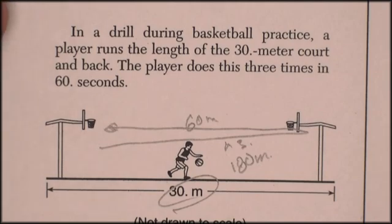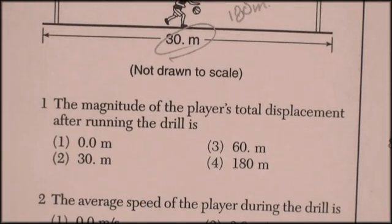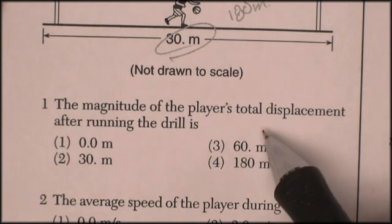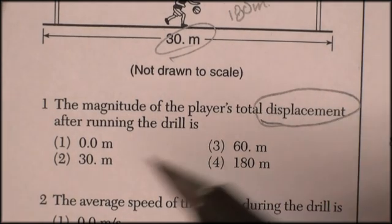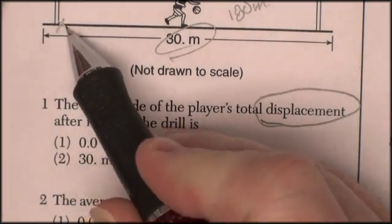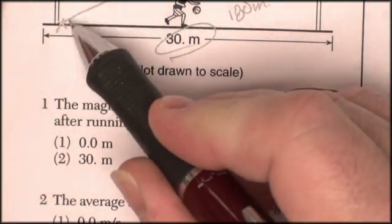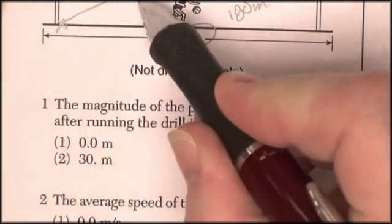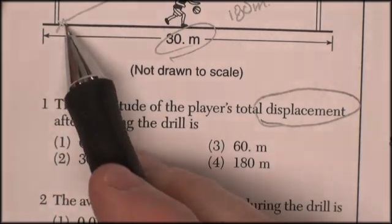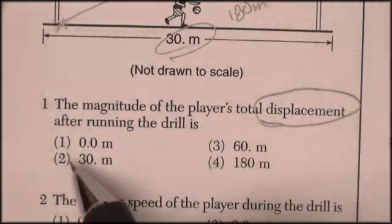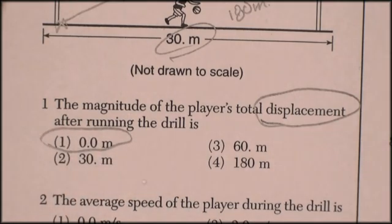Six seconds. Boy, he was ripping. 60 seconds. So let's go see what they want to know about this guy. The magnitude of the player's total displacement. Displacement is a vocabulary word. You start here, displacement refers to the vector from one point to another point. From displaced to that place. And if he starts here and back three times, his total displacement's got to be zero. Kind of a tricky vocabulary question.